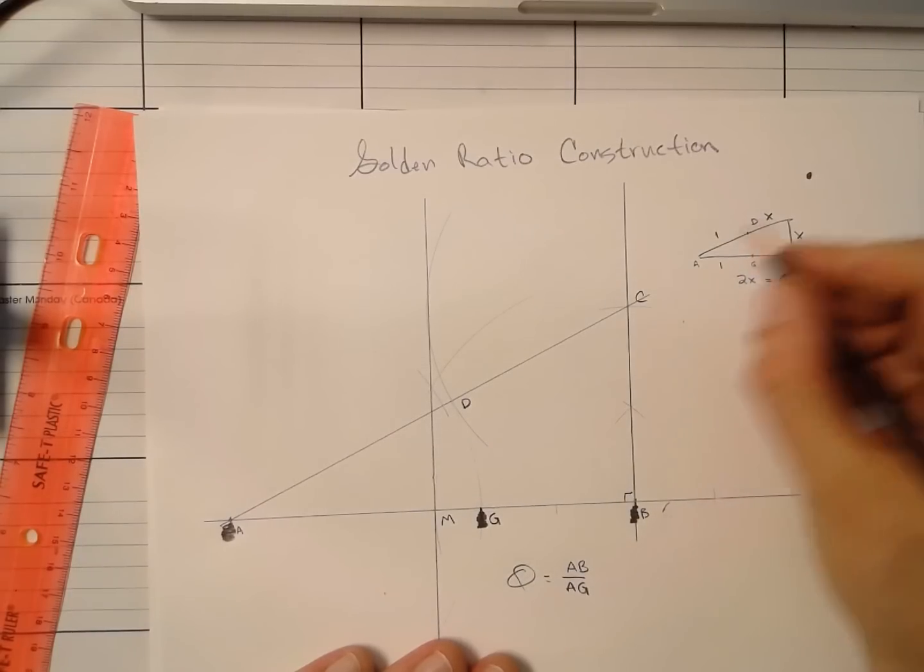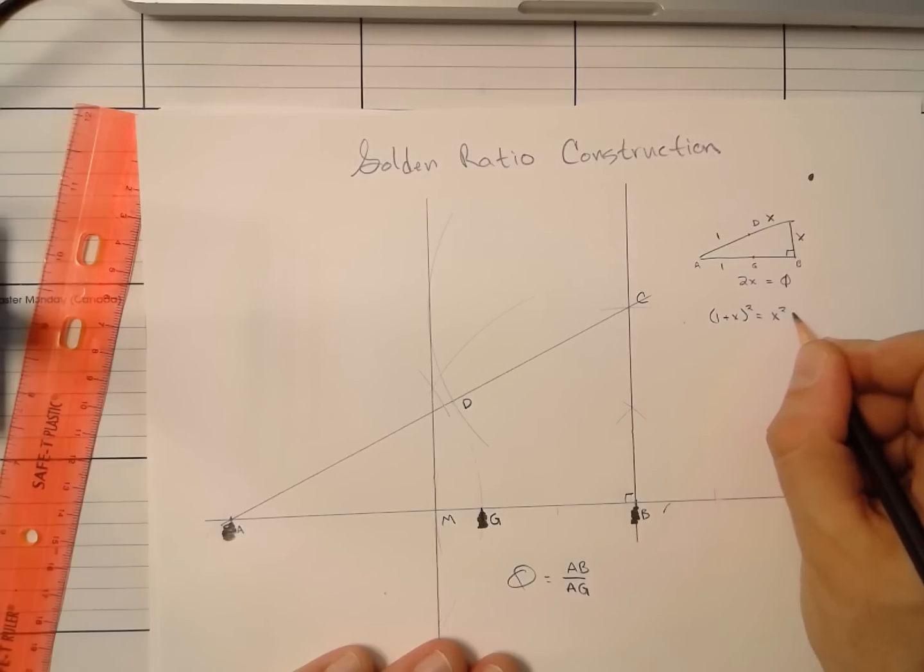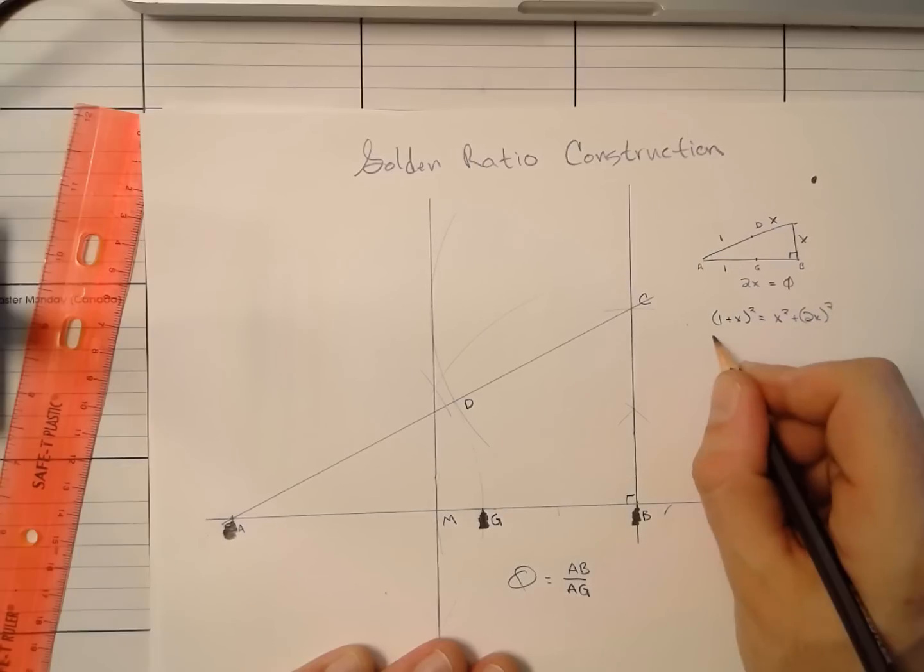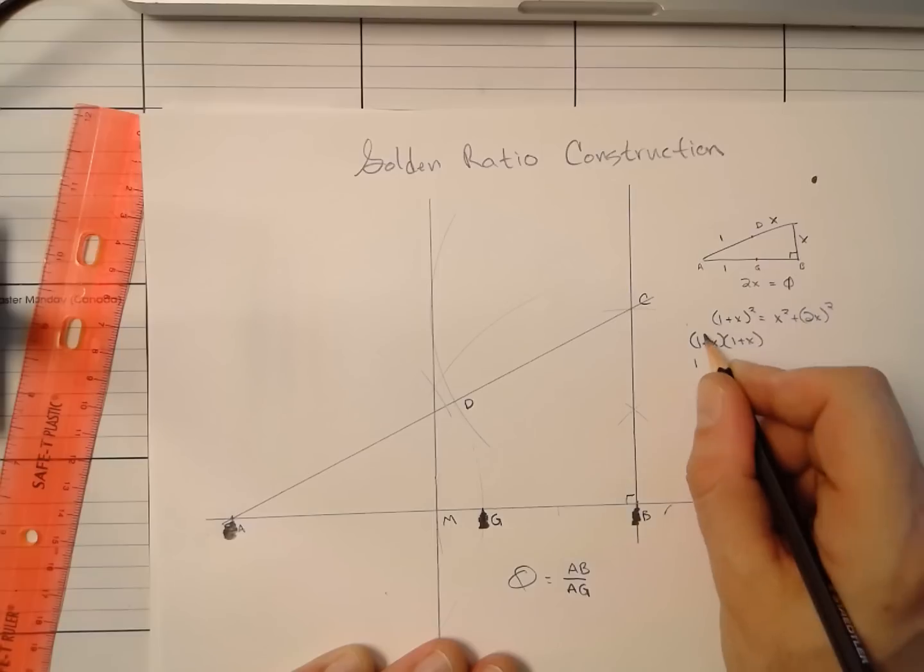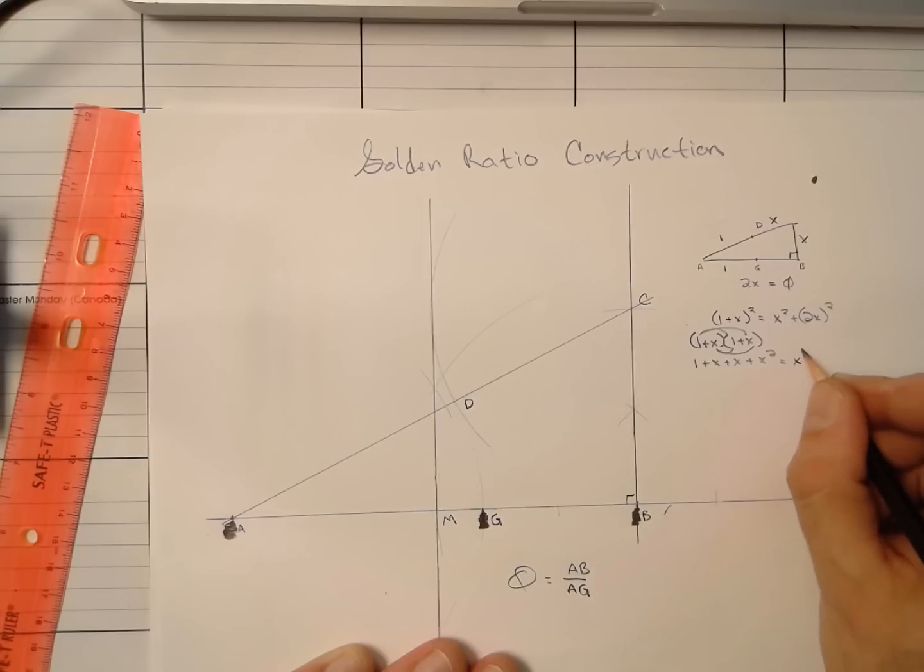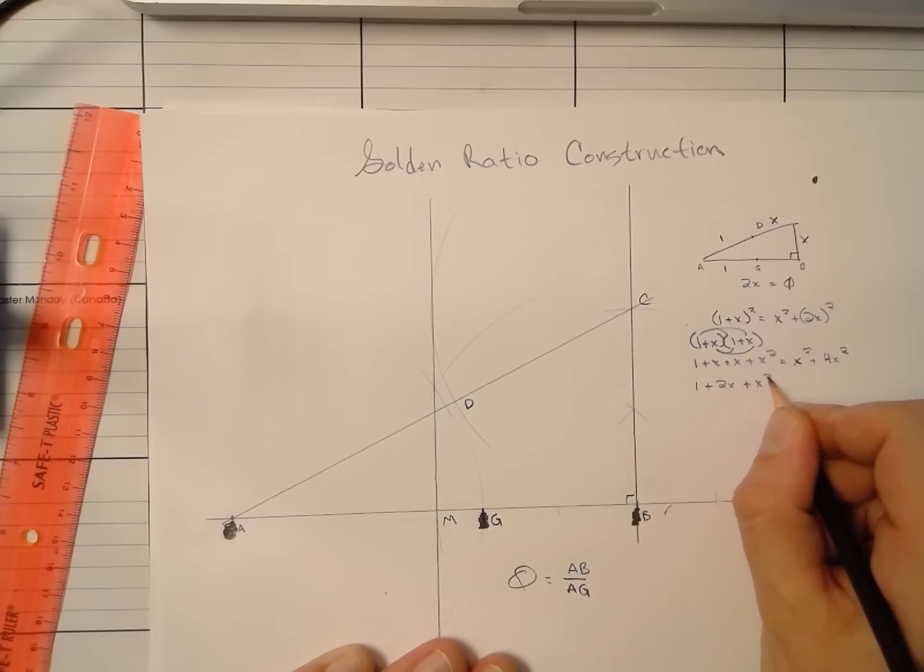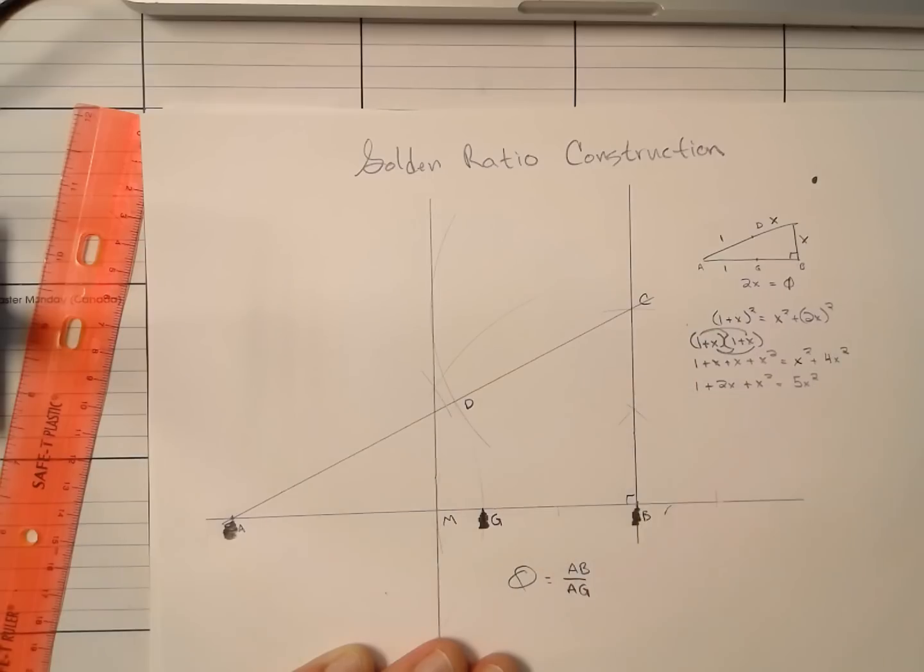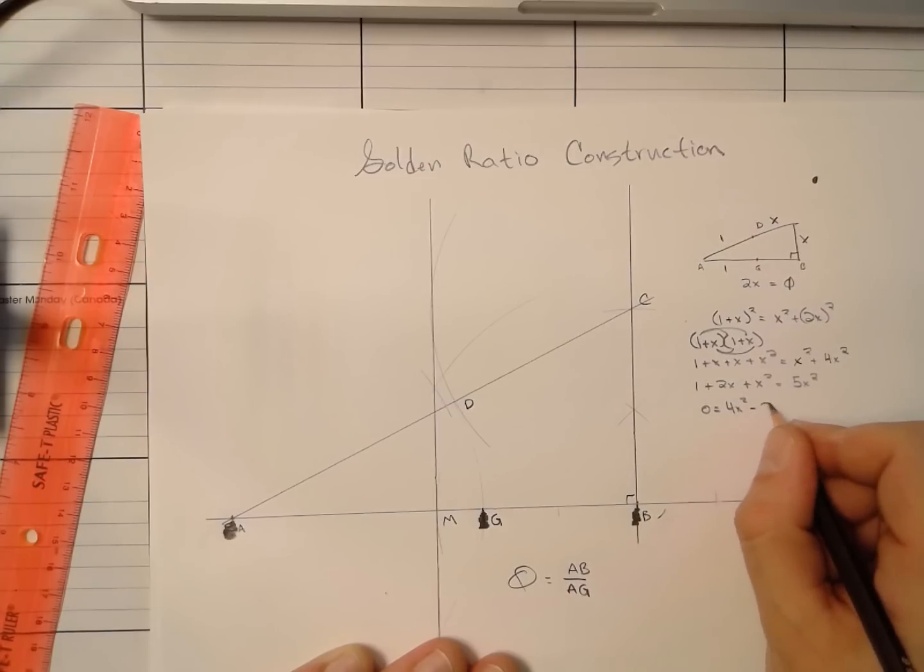So using this right triangle and the Pythagorean theorem, we get 1 plus X quantity squared. The hypotenuse should equal X squared plus 2X squared, the sum of the squares of the two legs. I do have to foil this out. It's another name for binomial distribution. 1 times 1 is 1. 1 times X is X. X times 1 is another X. X times X is X squared. On the other side of the equation, we have X squared plus 2X times 2X is 4X squared. Let me combine my like terms here now. 1 plus 2X plus X squared equals 5X squared.